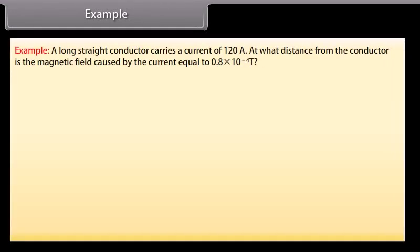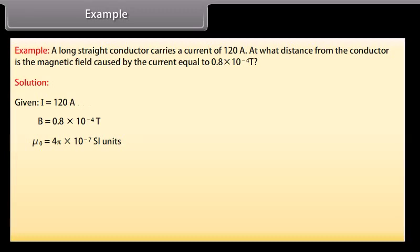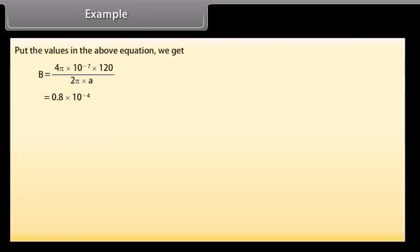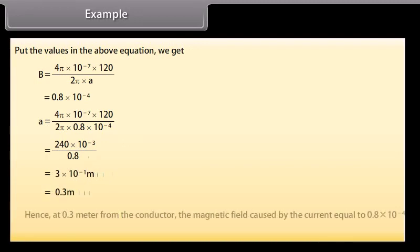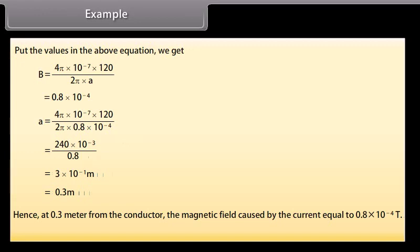Example: A long straight conductor carries a current of 120 Ampere. At what distance from the conductor is the magnetic field equal to 0.8 into 10 raised to the power minus 4 Tesla? Given: I = 120 A, B = 0.8 × 10⁻⁴ T, mu_0 = 4 pi × 10⁻⁷ SI units. Using B = mu_0 I upon 2 pi R, and putting the values, we get R = 0.3 metres. Hence, at 0.3 metres from the conductor, the magnetic field caused by the current equals 0.8 × 10⁻⁴ Tesla.